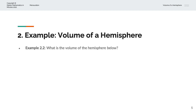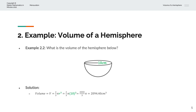In the second example, we are asked to calculate the volume of the hemisphere below. Visually, we have a hemisphere with radius of 10 centimetres. The volume is equal to V = 2/3 × π × r³. We replace r with 10, and raise that to the power of 3, giving us 2,000/3 × π, which equals 2,094.40 centimetres cubed.